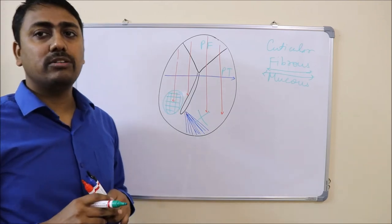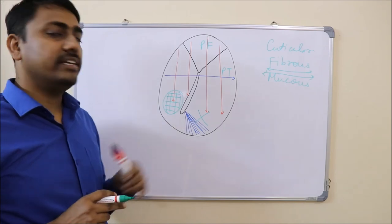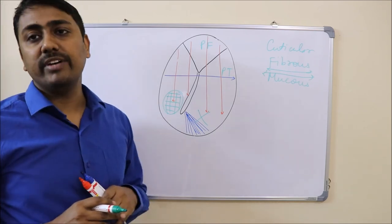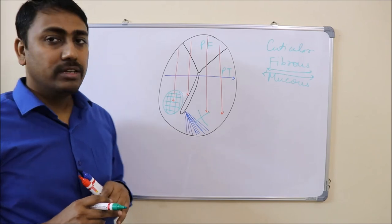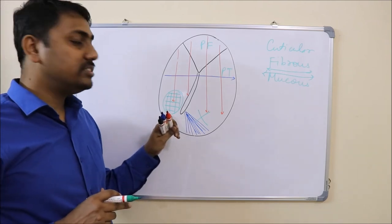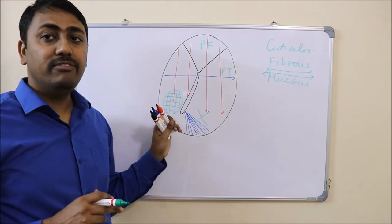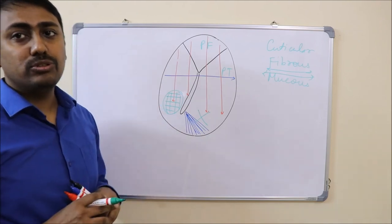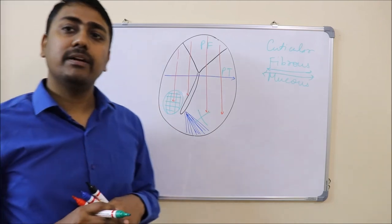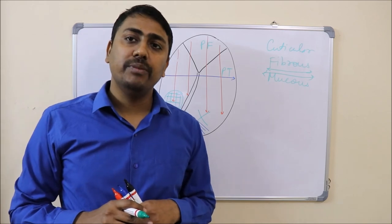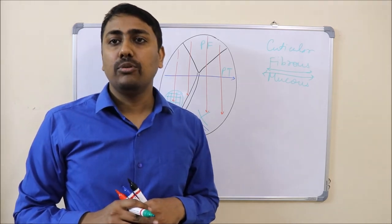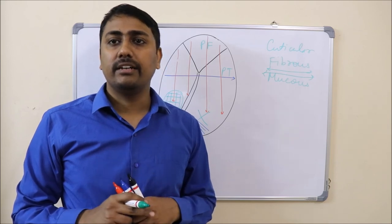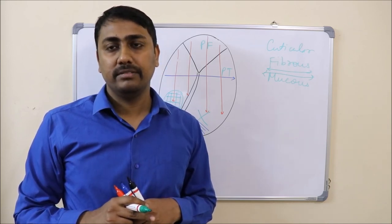Another important reason for choosing the postero-inferior area is that it has a very rich vascular supply, so any incision given at this level will heal faster. This explains the anatomical basis of myringotomy done in the postero-inferior quadrant of the tympanic membrane. Thank you.